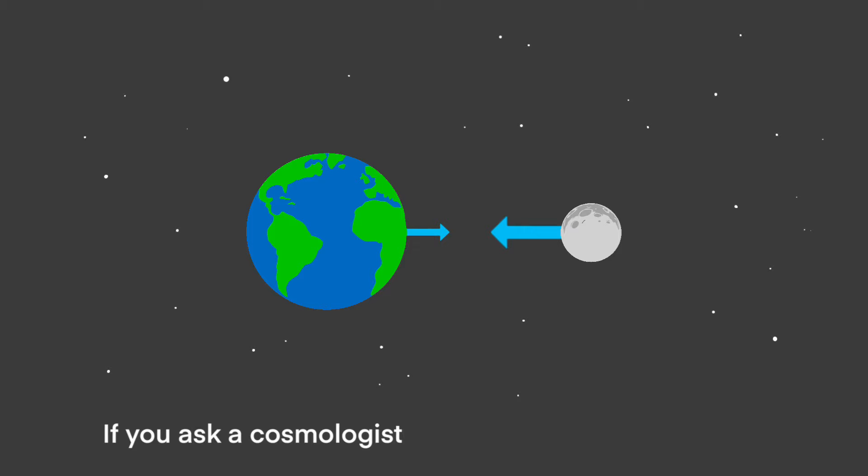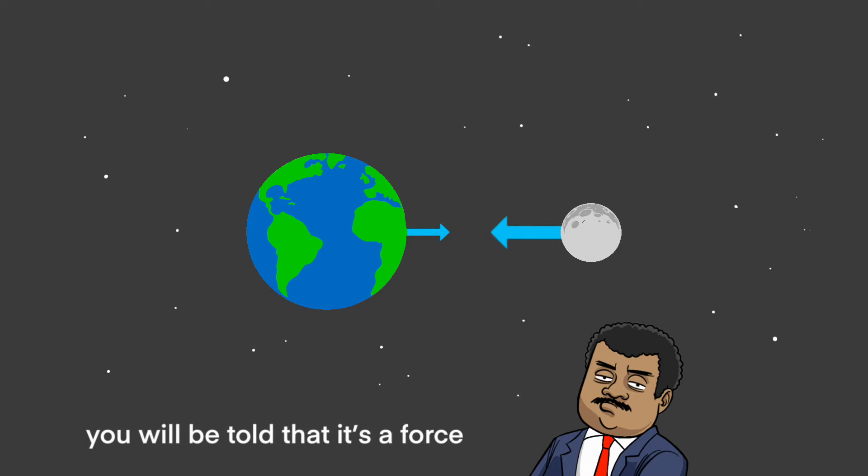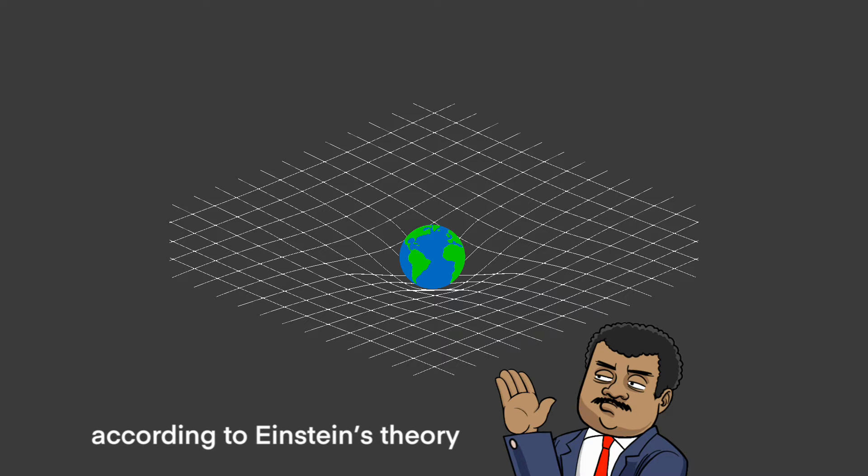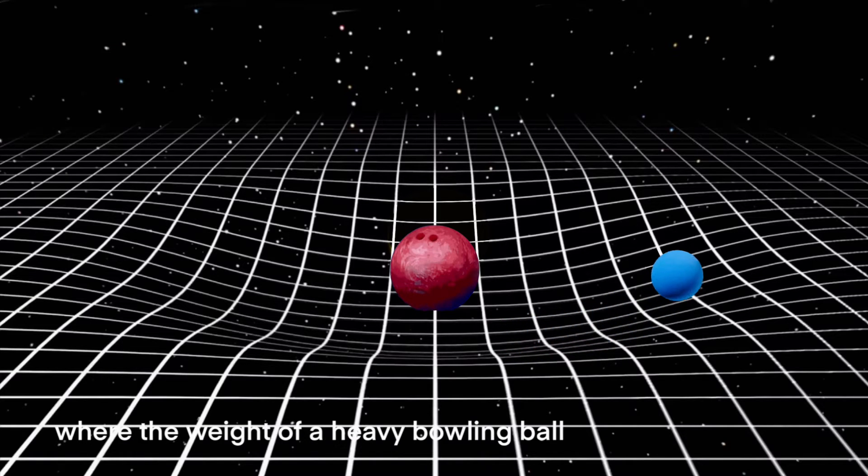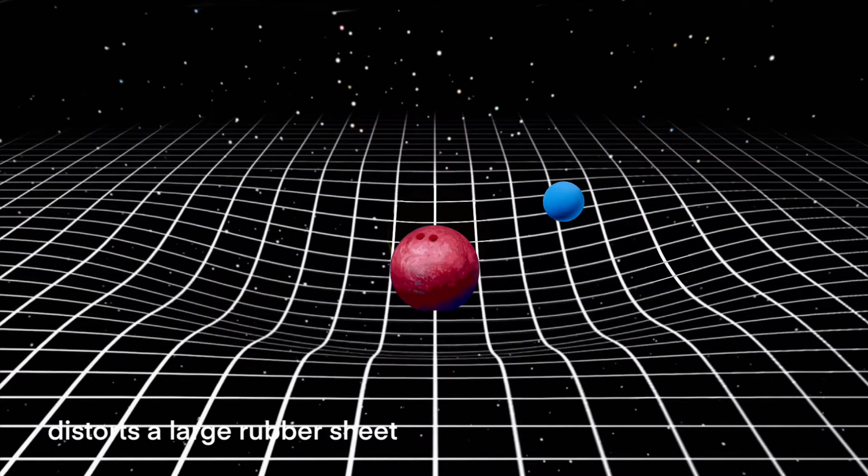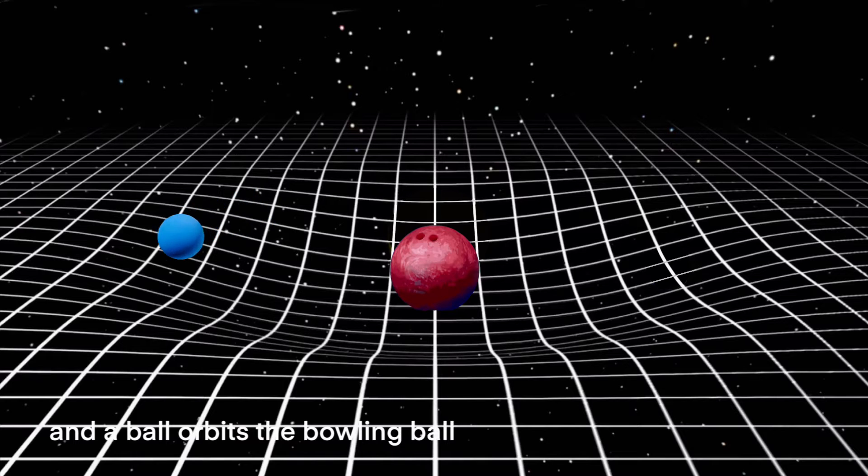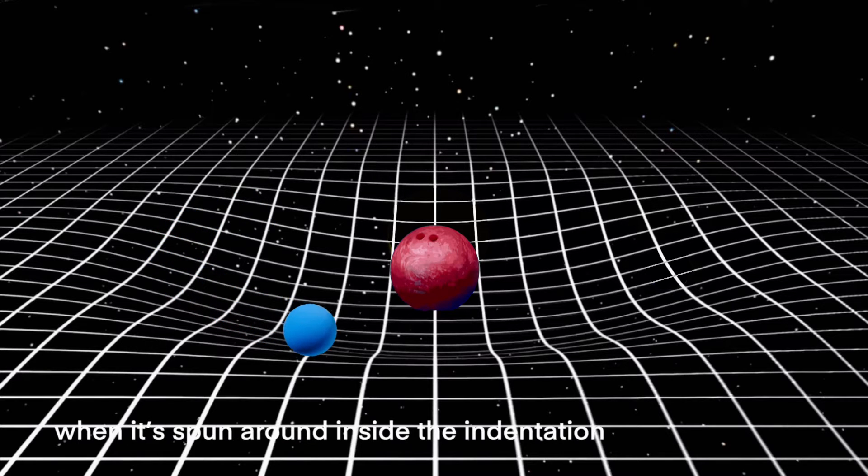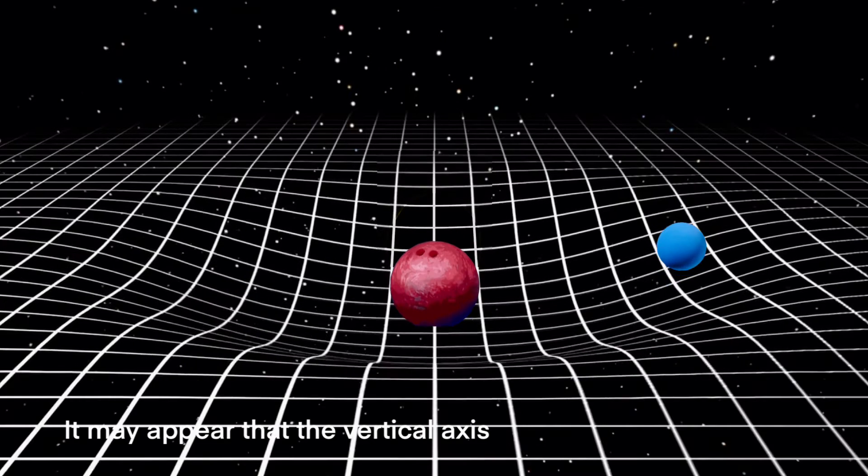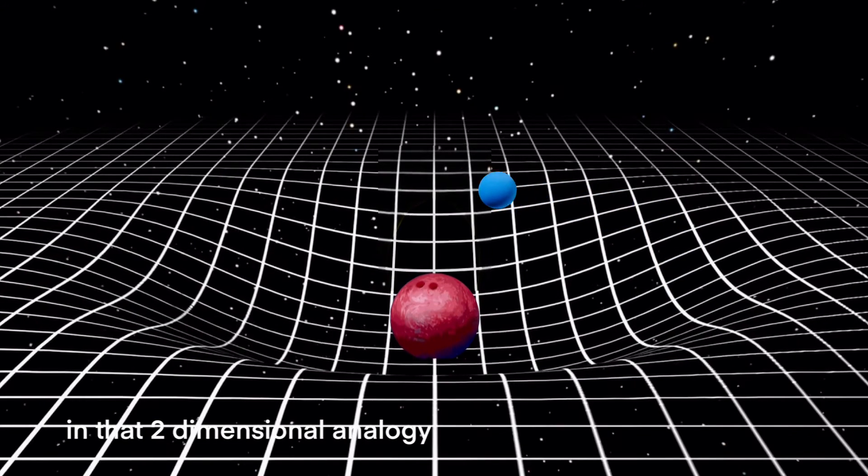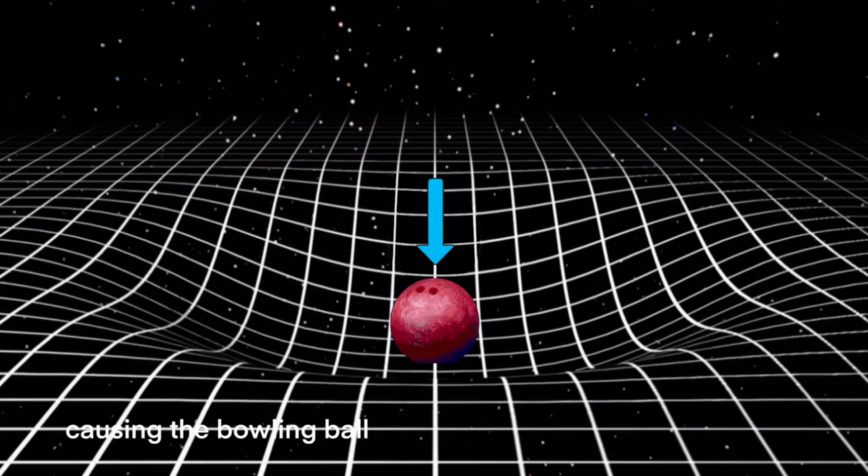If you ask a cosmologist or astrophysicist what gravity is, you'll be told that it's a force created by the mass of an object causing space-time to curve according to Einstein's theory of general relativity. They may explain the analogy where the weight of a heavy bowling ball distorts a large rubber sheet, and a ball orbits the bowling ball when spun around inside the indentation or gravity well. But you can't use gravity in an analogy to show how it acts on mass to distort space-time that then results in gravity.